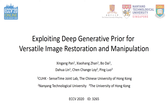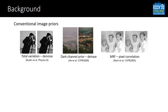In this work, we exploit the image prior of a generative model, namely deep generative prior, for versatile image restoration and manipulation. Various image priors have been proposed for image restoration, like total variation, dark channel prior, and Markov random field. These priors often capture certain statistics of images and serve a dedicated purpose.